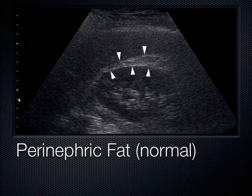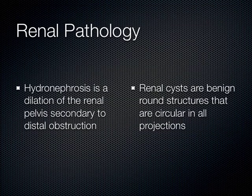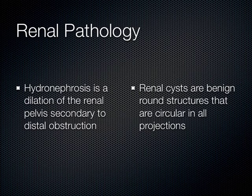Around the kidney, we often see perinephric fat — this is normal. Our eye is drawn to things that are bright on the ultrasound screen, but really it's just visceral fat around the kidney. When looking at a kidney, we're assessing whether we see something out in the cortex or in the collecting system — the renal pelvis or renal sinus. If something is out in the cortex, anechoic and spherical in all dimensions, it's a renal cyst.